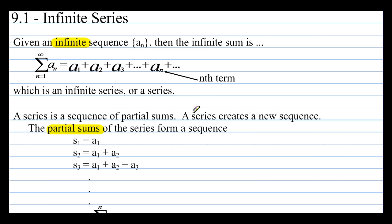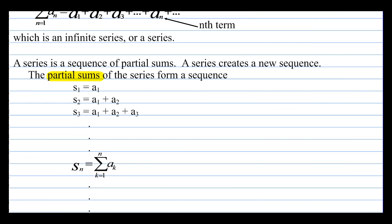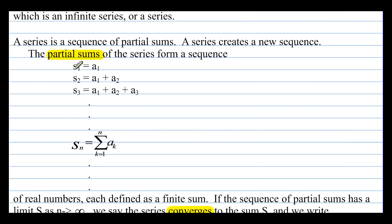A series is a sequence of partial sums — it creates a new sequence. The partial sums form a sequence: s sub 1 is just the first term, s sub 2 is the first term plus the second term, and so on. So s sub 3 equals a sub 1 plus a sub 2 plus a sub 3, and you could continue that infinitely — you have a sequence of partial sums.